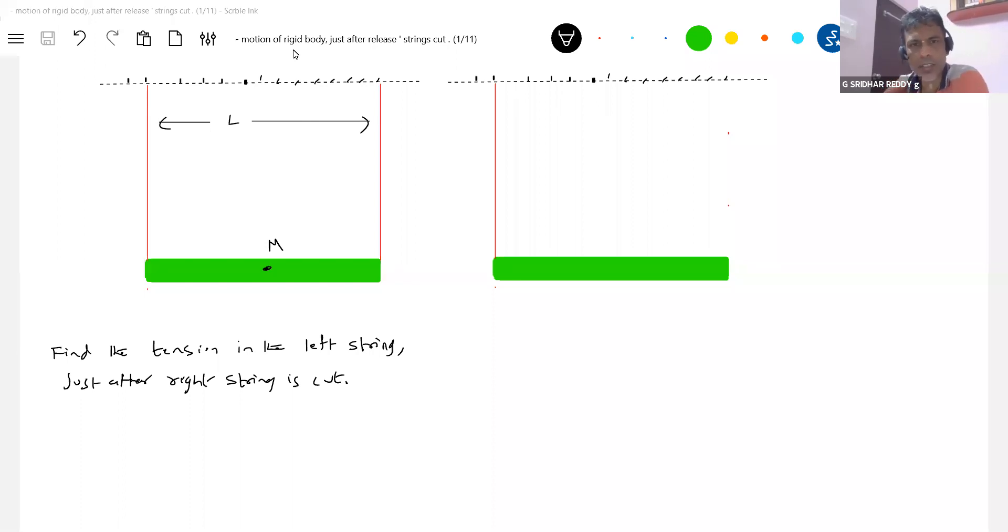Read the question. There is a rod of mass M and length L. It is suspended by two strings. So initially, what is the tension? It's in equilibrium. The tension, let it be T0 and the weight Mg will act. Therefore, for equilibrium of the rod, 2T0 minus Mg equals 0. So the initial tension is Mg by 2.